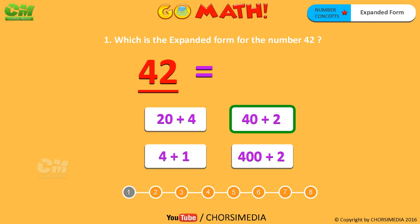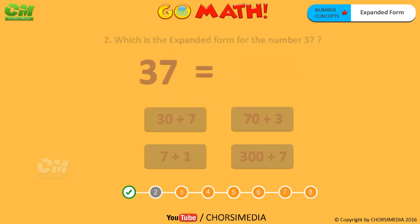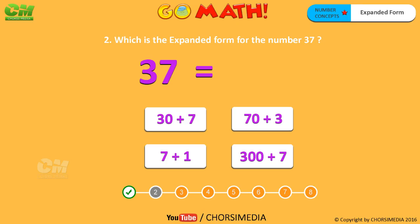Which is the expanded form for the number 37? The digit 3 is in the tens place, so the value of 3 is 30. The digit 7 is in the ones place, so the value of 7 is 7. Together, the expanded form for the number 37 is 30 plus 7. You are right, the correct answer is 30 plus 7.